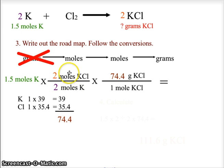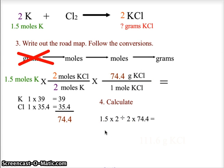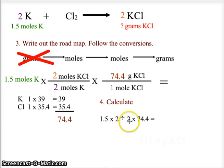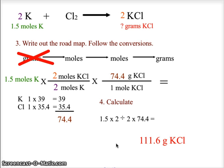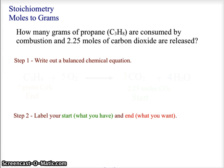We've canceled moles of potassium and moles of potassium chloride, leaving an answer in grams. The calculation is 1.5 × 2 ÷ 2 × 74.4, since numbers in the numerator are multiplied and numbers in the denominator are divided. This comes out to 111.6 grams of KCl, but since our original data had three significant figures, the answer rounds to 112 grams of potassium chloride.